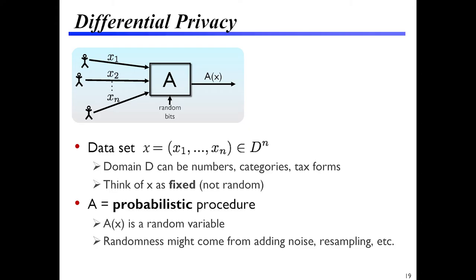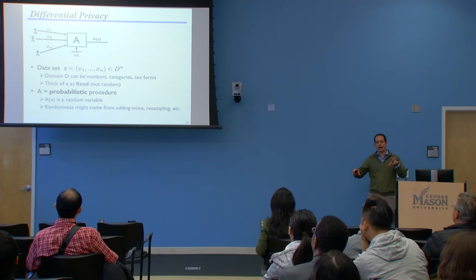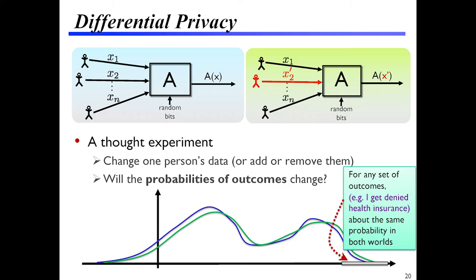Let me explain what this notion means. Imagine we've got an algorithm A that takes a data set of individuals — each person contributes one record x1 through xn. The records could be numbers, bits, or something complicated like text or images. There's randomness in this picture that comes from algorithm A processing the data — we assume it's probabilistic, so for every data set x, the output of A is a random variable with its own probability distribution. This randomness could come from adding noise, subsampling, or other more sophisticated procedures.